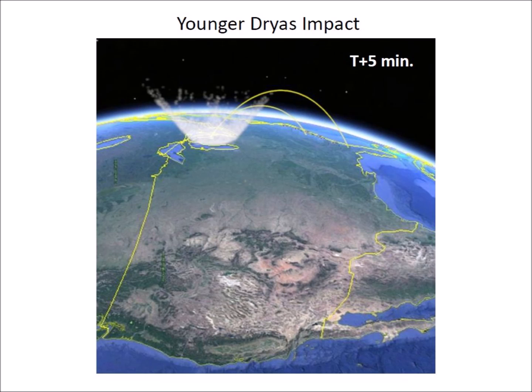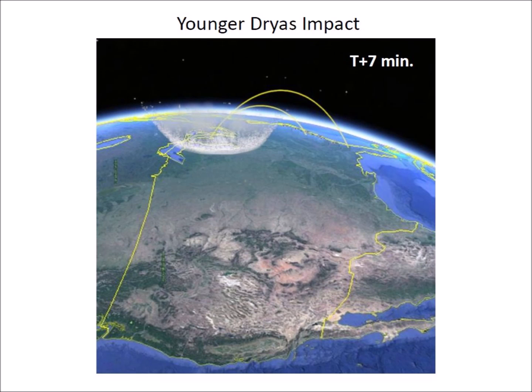well above the Earth's 100 kilometer thick atmosphere. Pieces of ice ejected later had speeds of 3 kilometers per second and reached heights of 150 kilometers above the Earth's surface.